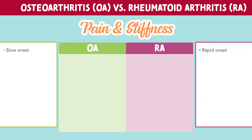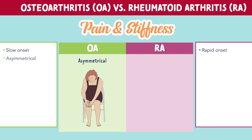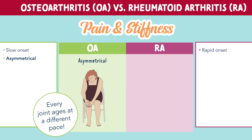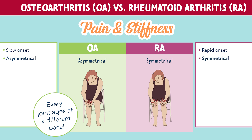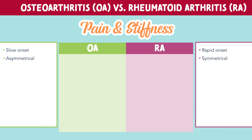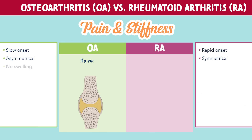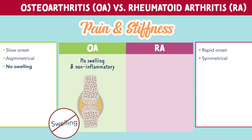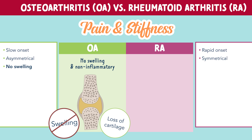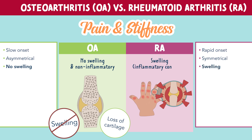For pain and stiffness — this is a really important one to remember. Osteoarthritis is asymmetrical pain, meaning it will affect one joint on one side of the body. Remember, it's wear and tear — every joint ages at a different pace. Where in rheumatoid arthritis, we will see symmetrical joint involvement, meaning both joints on both sides will be affected. In OA, there is no swelling — it's a non-inflammatory condition involving loss of cartilage. But RA involves swelling because it's an inflammatory condition.